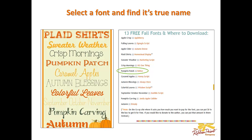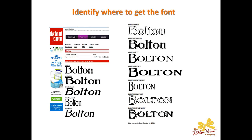If I double click on Bolton, I'm going to get to the source — in other words, identify where I can get this font. The site is called dafont.com. Under Bolton there are a bunch of different versions, because every font has multiple versions: bold, outline, and all different styles. The one I'm going to be selecting is called Bolton Titling Shadowed.